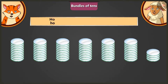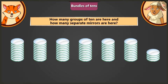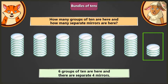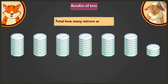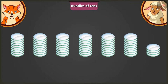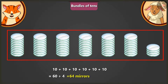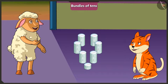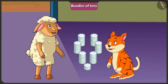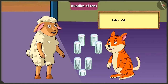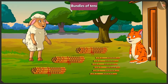Lily is asked: how many groups of tens and how many separate mirrors are there? There are six groups of tens and four mirrors separately. So in all, six groups of ten means sixty, and sixty plus four equals sixty-four mirrors. Lily counted so many mirrors very easily. Now twenty-four mirrors can be given from the sixty-four, leaving forty mirrors.